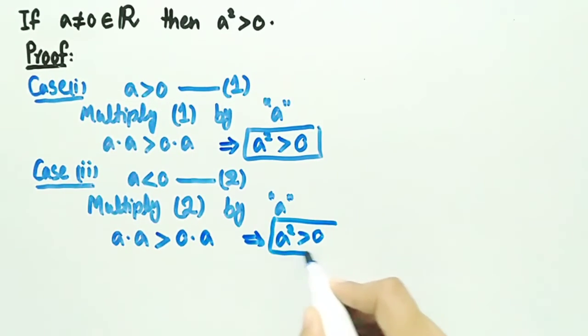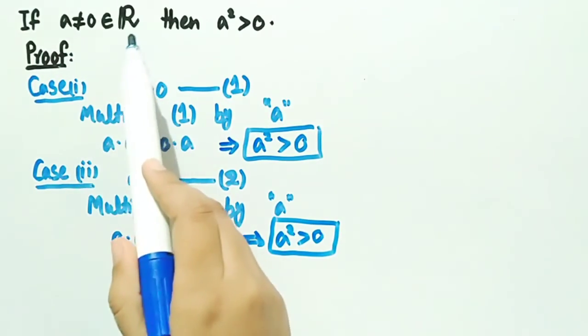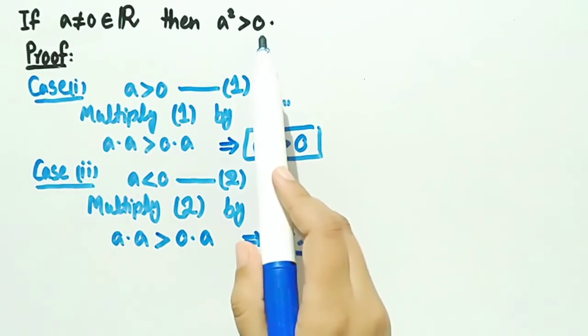So in both cases, we have proved that for any non-zero real number, a square is greater than zero.